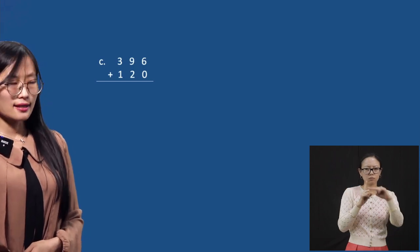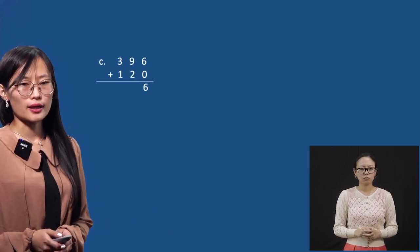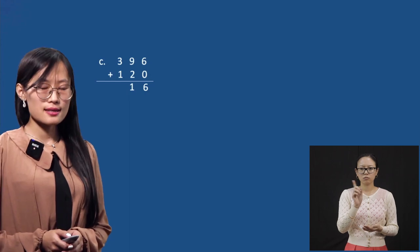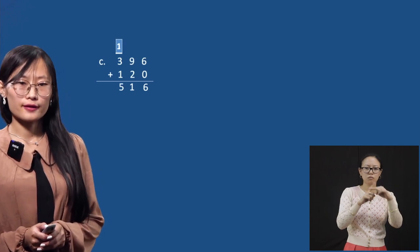Now 396 plus 120. Starting from ones: six plus zero is six. Tens: nine plus two is eleven — we write one in the tens place and carry one to hundreds. One plus three is four, and four plus one is five. So the answer is 516.